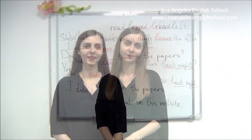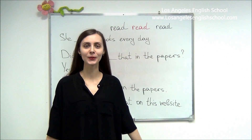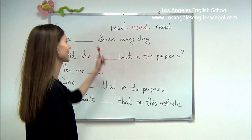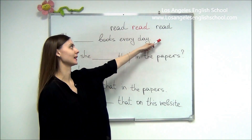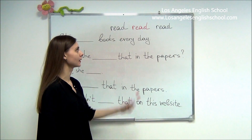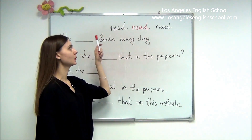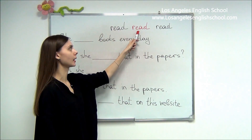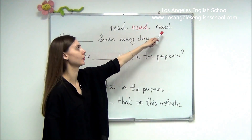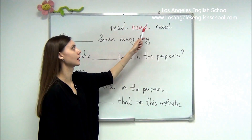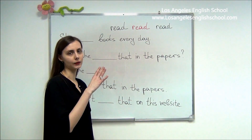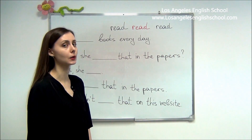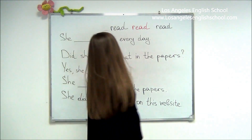Our next irregular verb is read, read, read. Pay attention that the spelling is the same, but the pronunciation is different. 'Read' is usually the present form, and 'read' is the past and past participle — also spelled 'read.' So write it down the same, but don't forget to pronounce it correctly depending on the tense you're going to use.